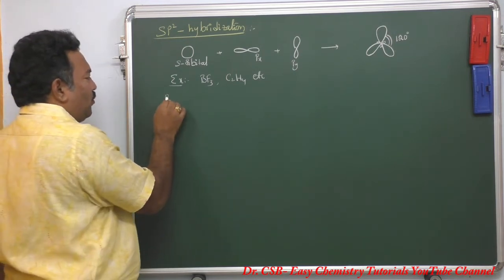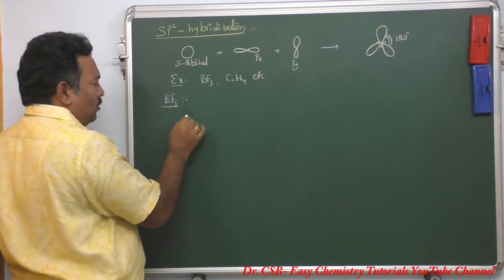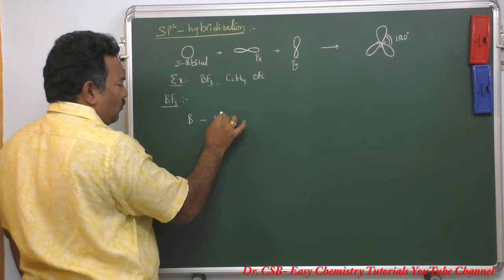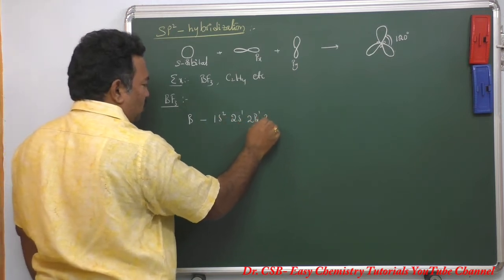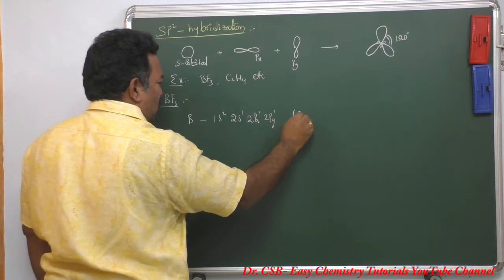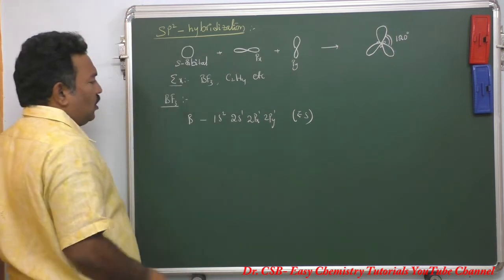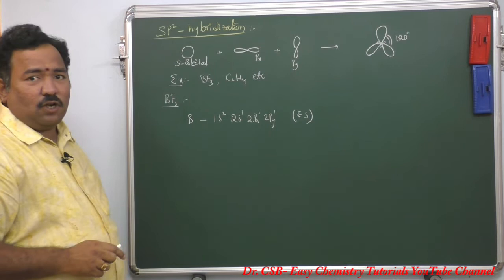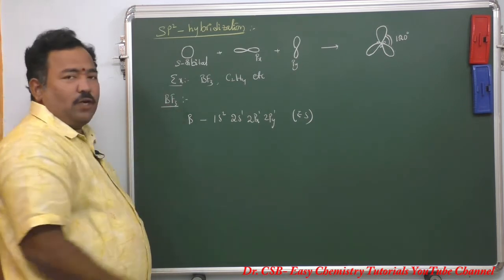In the BF3 molecule, boron is the central atom. The electronic configuration of boron in its excited state is 1s2, 2s1, 2px1, 2py1. So here there are three unshared electrons which are ready to bond with the three fluorine atoms.